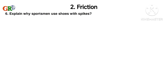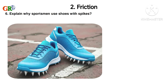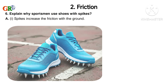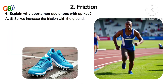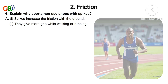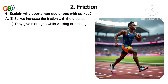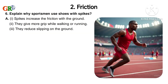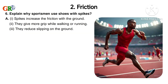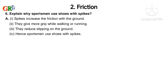Sixth question: Explain why sportsmen use shoes with spikes. Spikes increase the friction with the ground, so they give more grip while walking or running and also reduce slipping on the ground. Hence sportsmen use shoes with spikes.